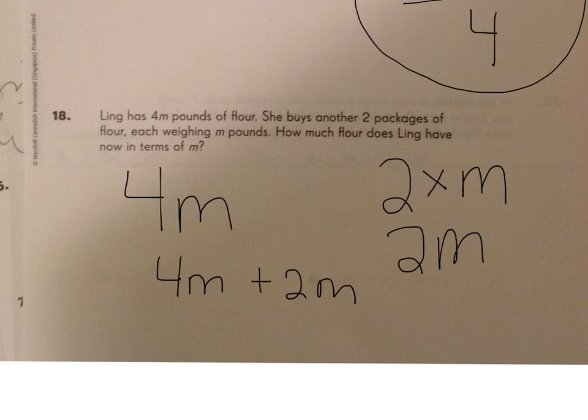So 4M plus 2M is 6M. He has 6M amount of flour.